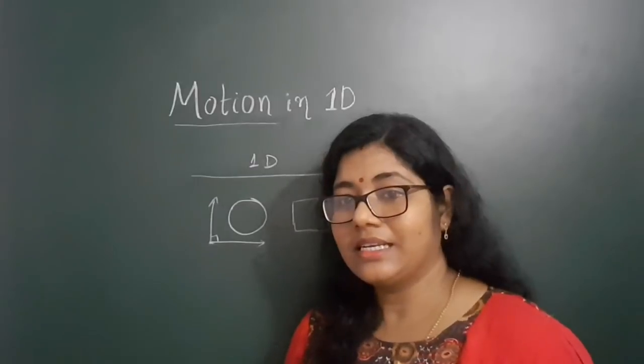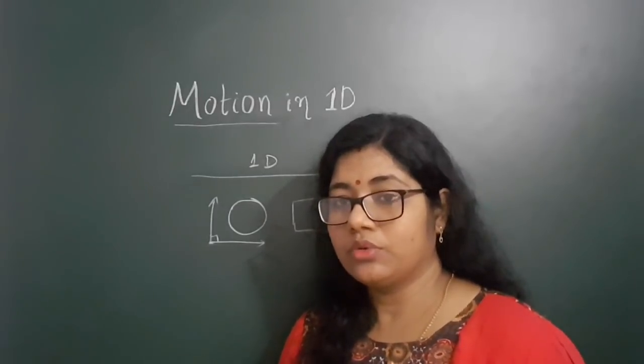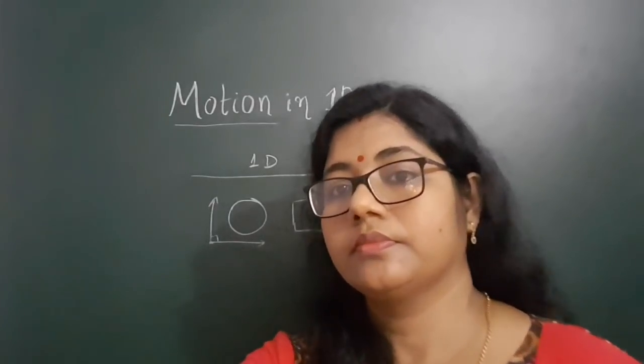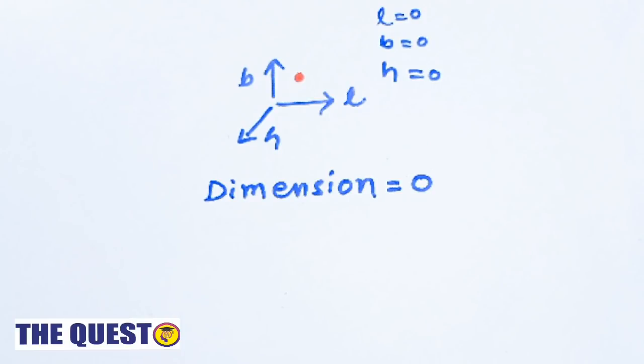So to understand it clearly, let us have a look on the clip. Now let us consider a dot. Then what will be its dimensions? Yes, it is dimensionless, as it has zero length, zero breadth, and zero height. And if we put this dot on a straight line.